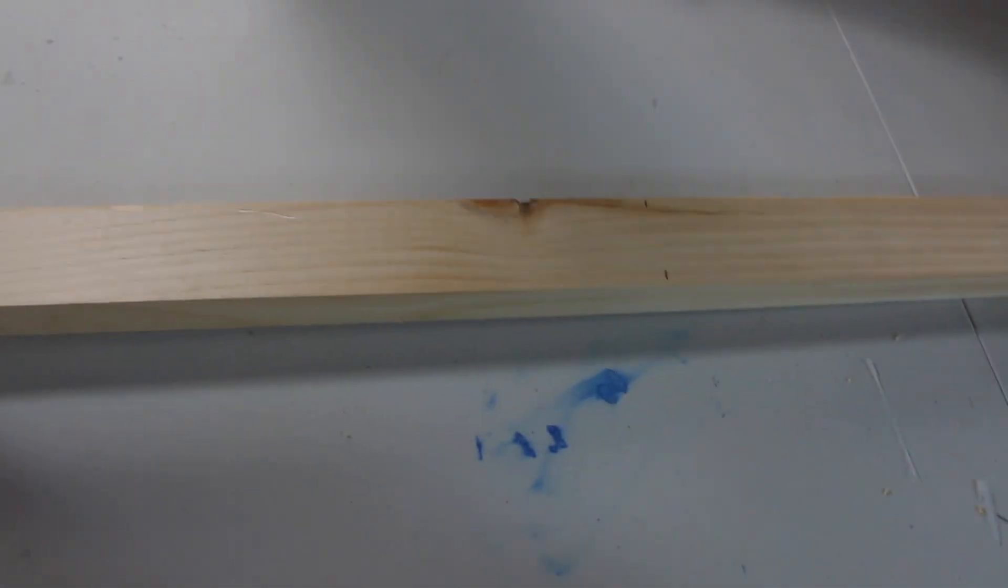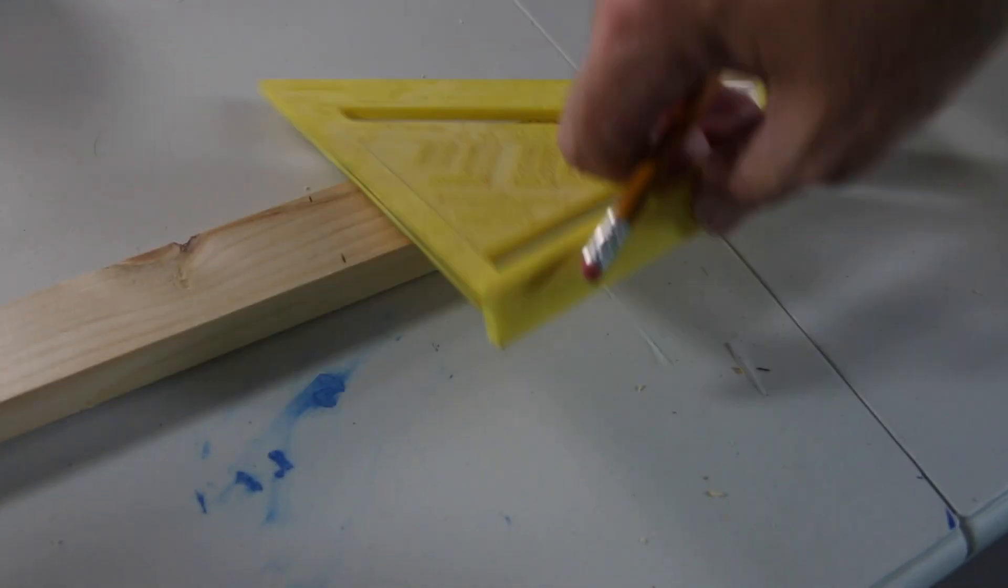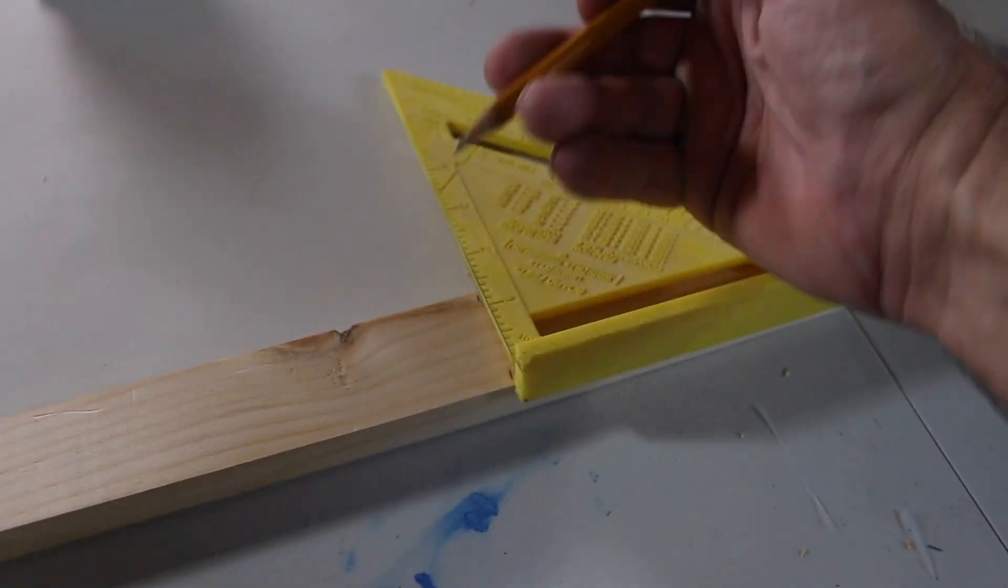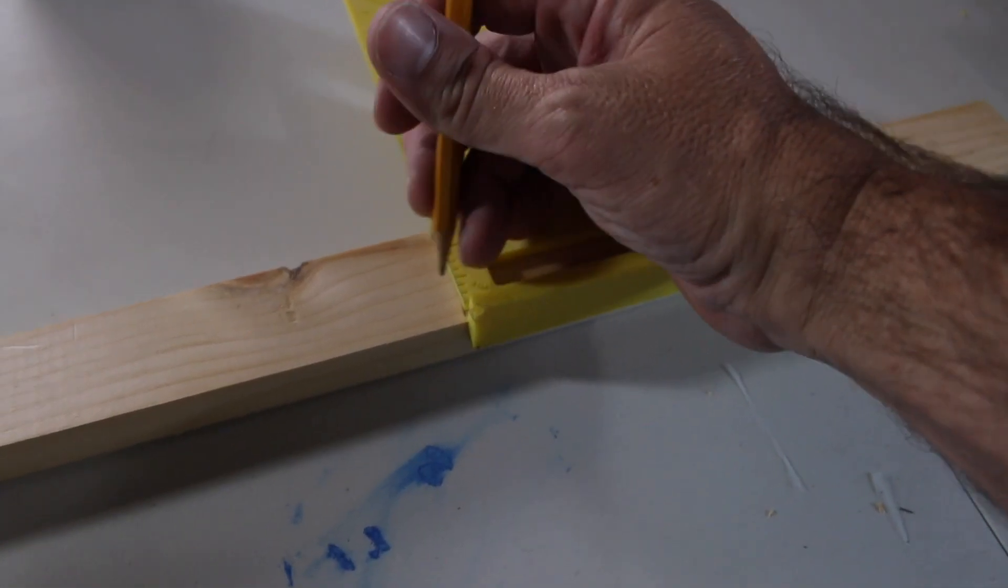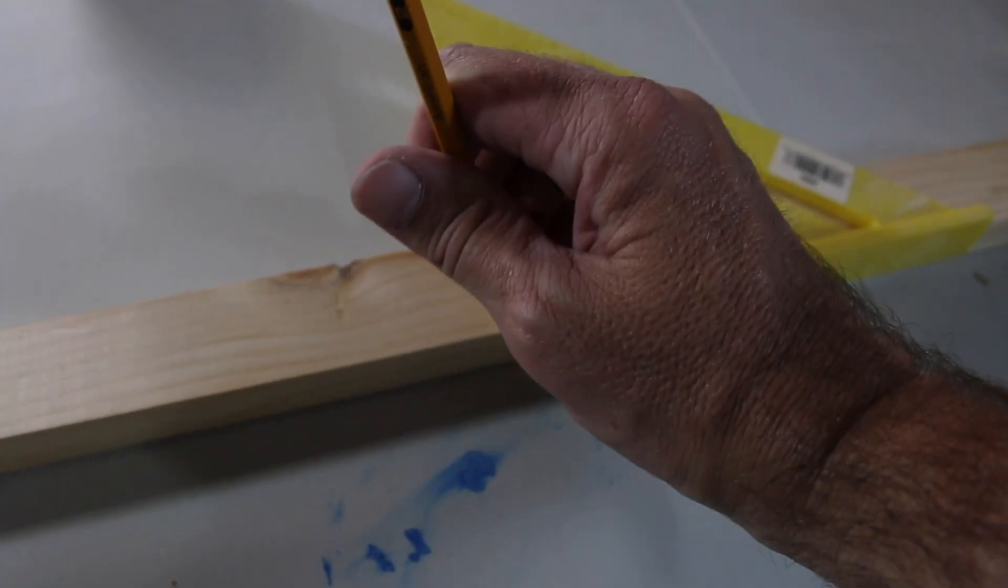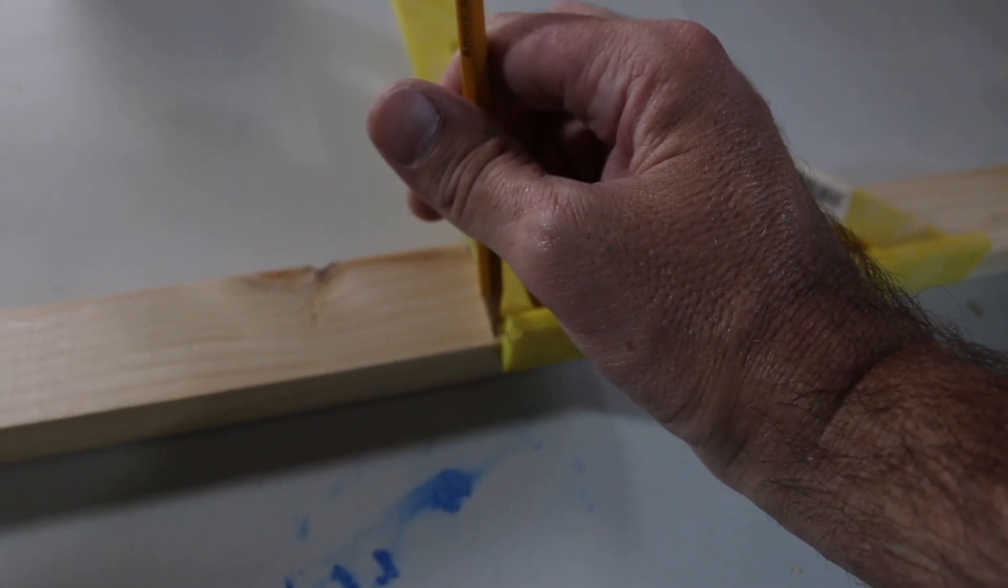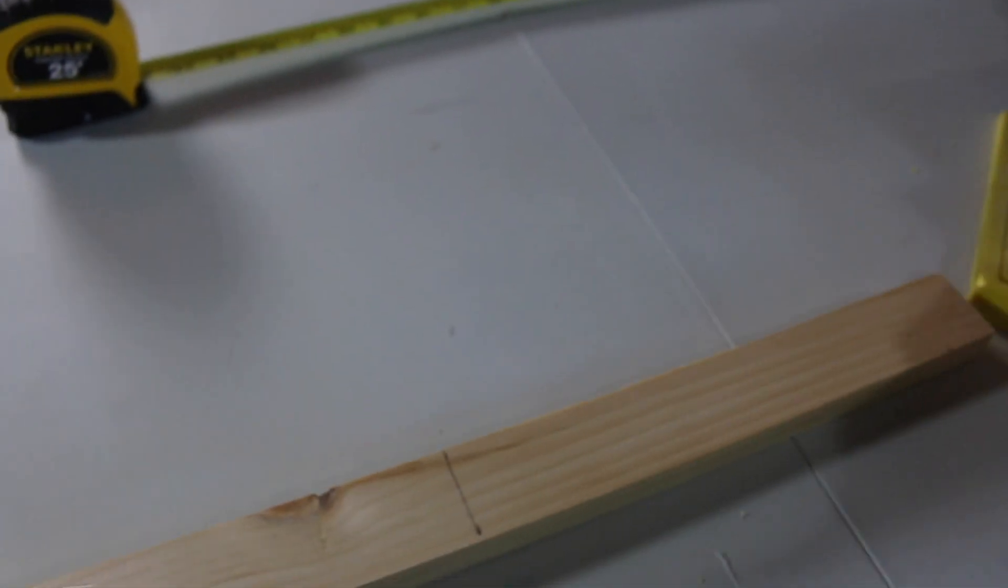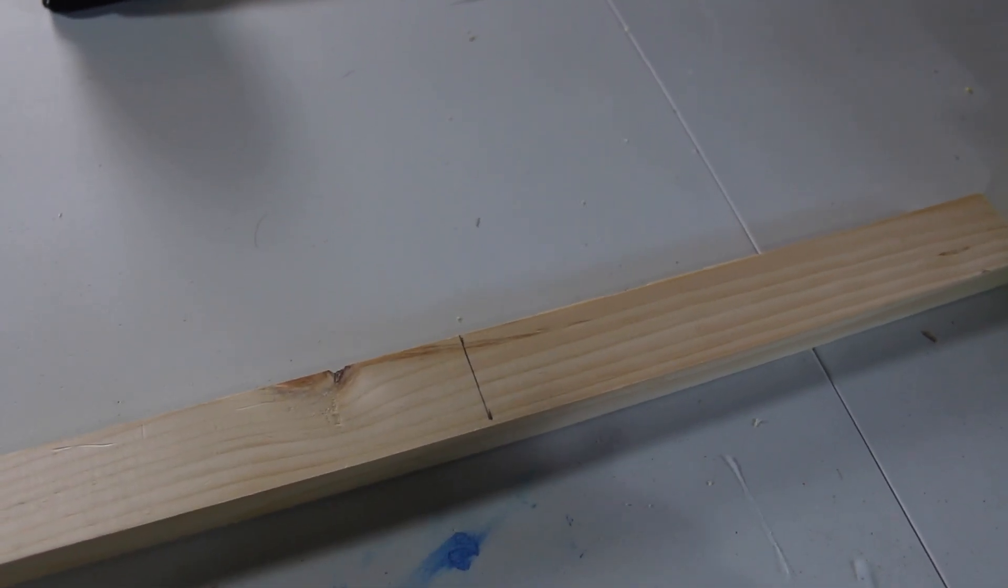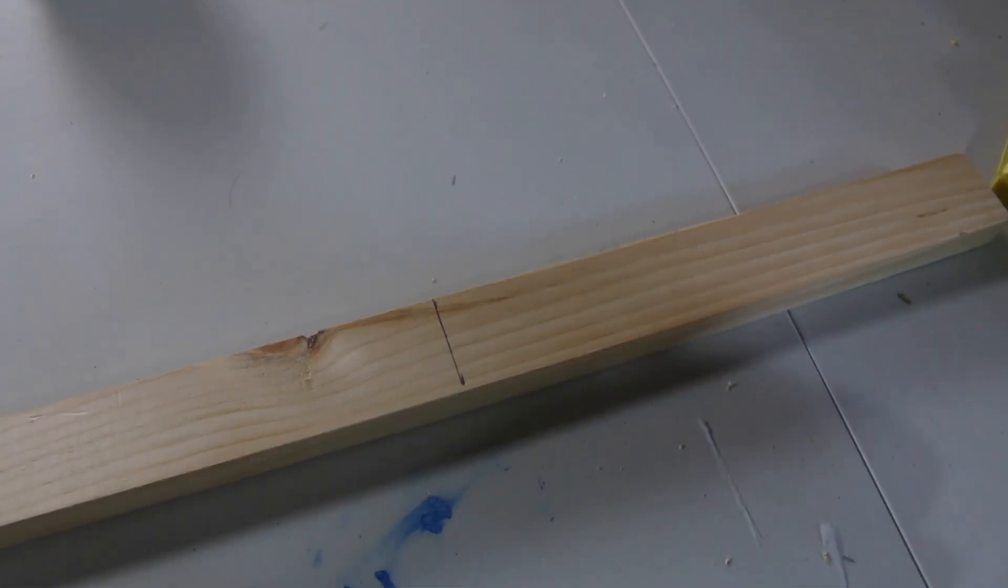Pull our tape measure off and you can go to a straight edge. There we go. Now what we got to do is cut this and I'm going to use a power saw but you could use a hand saw if you'd like.